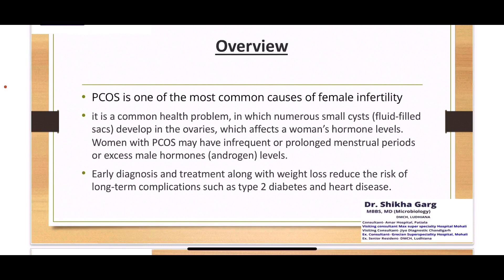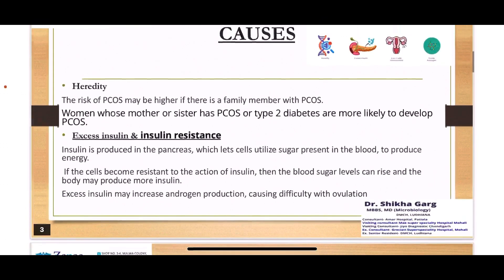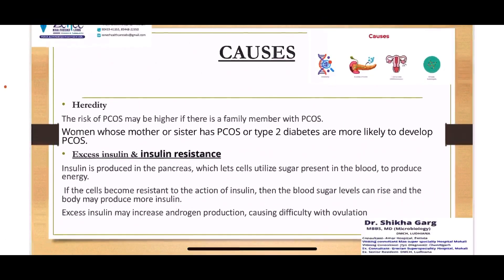Early diagnosis and treatment, along with weight loss if the person is obese, also reduces the risk of long-term complications. Causes could be hereditary — specifically in females whose mothers or sisters already have PCOS or type 2 diabetes, they are more likely to develop PCOS.